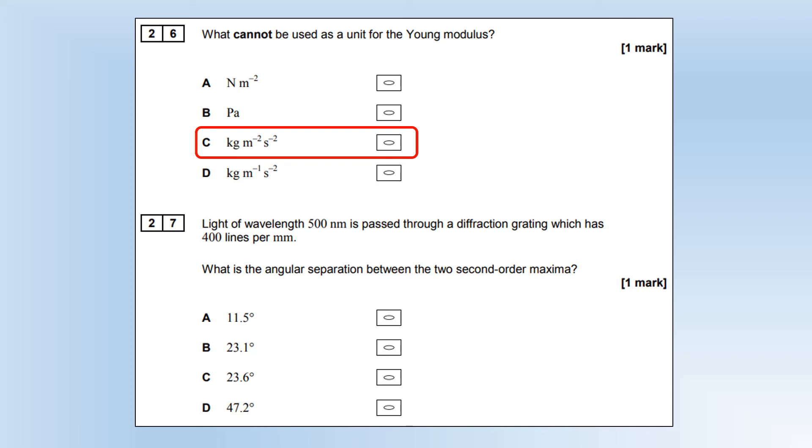Light of wavelength 500 nanometers is passed through a diffraction grating, which has 400 lines per millimeter. What is the angular separation between the two second order maxima? First thing I'm going to do, in place of D, you put 1 over N. And then we can substitute the numbers in to find the angle to the second order, remembering to convert into lines per meter. And then we double that to find the angle between the two second order, which is going to be 47.2.